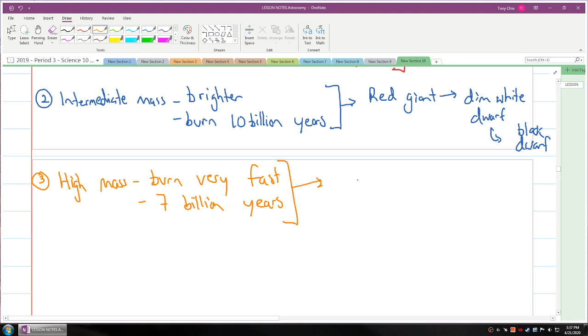The first way they could die is they could collapse on itself and lead to what we call a supernova, which is a giant explosion that spreads out the guts of a star.